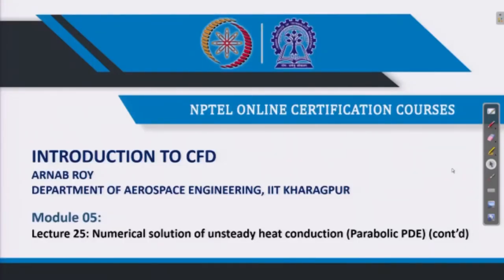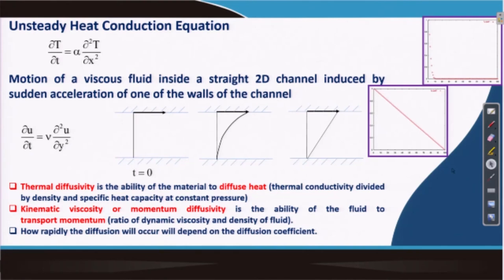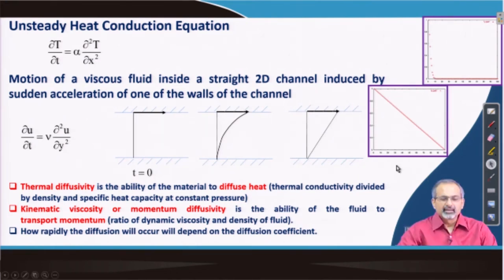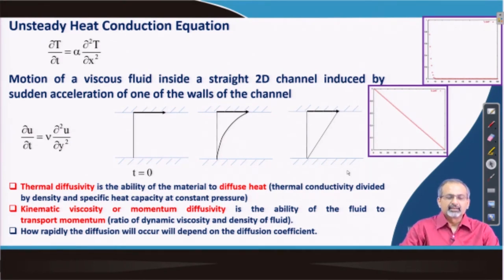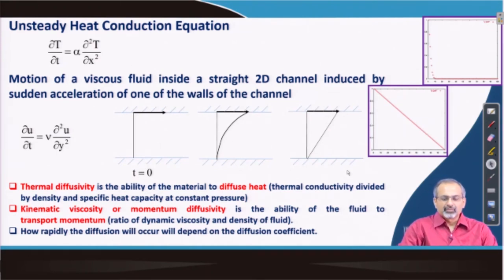We continue our discussion on numerical solution of parabolic partial differential equations. Here we would talk about both the unsteady heat conduction equation as well as the Stokes first problem. The unsteady heat conduction equation involves a time derivative term as well as a space derivative term. The time derivative is first order in time, while the space derivative is second order, and there is a thermal diffusivity term associated with that second order spatial derivative, which essentially decides the extent to which diffusion of heat occurs.